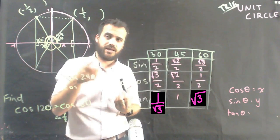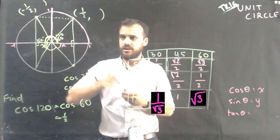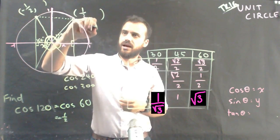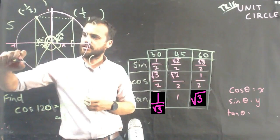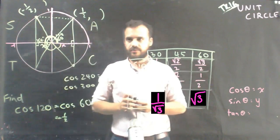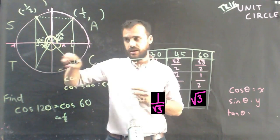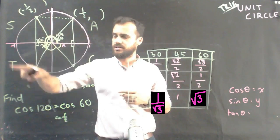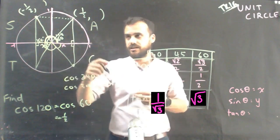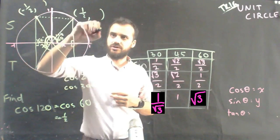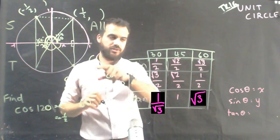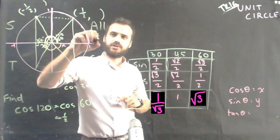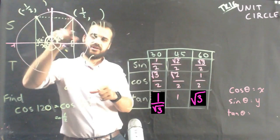Now luckily, there's a handy way to remember this. C, A, S, T. Now, the way that we read this is cast. And what it says is that all ratios, all ratios are going to be positive in this quadrant.